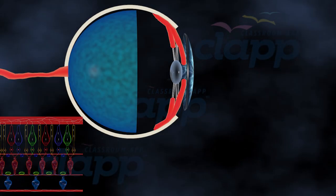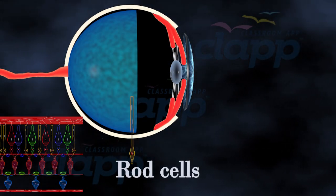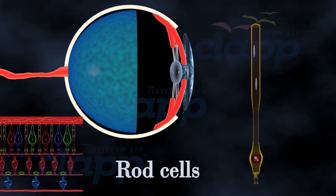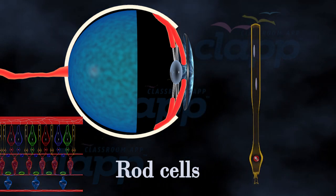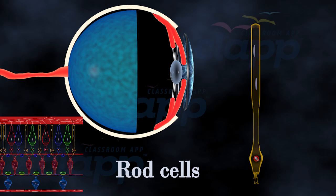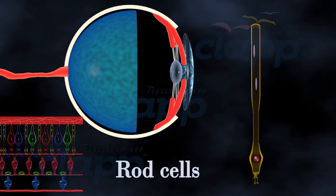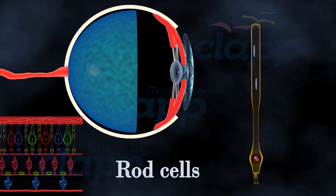Rods and low-light vision. The rod cells in the retina are responsible for our vision in low-light conditions. They detect motion and help us navigate in dimly-lit environments, like when stargazing or walking at night.